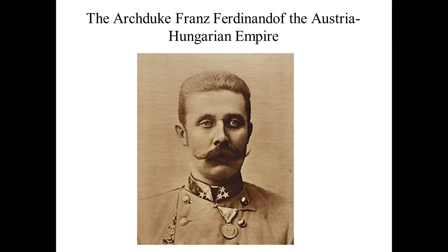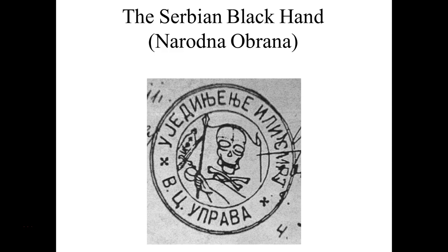Everyone should be happy — he was happy, he had a pregnant wife with him named Sophia. But on the other side, there was a group, a bunch of college students, that formed a group called the Serbian Black Hand. The Black Hand believed that Sarajevo was theirs, that Serbia should exert its power and take it back. They felt it was really disrespectful what Franz Ferdinand was doing, so they resolved to kill him. They're a bunch of college kids who don't know what they're doing.